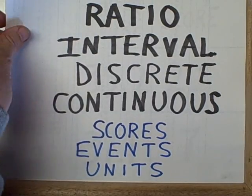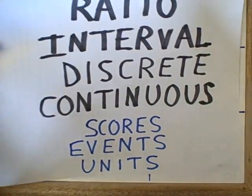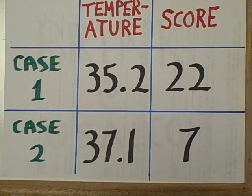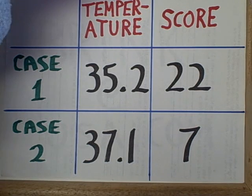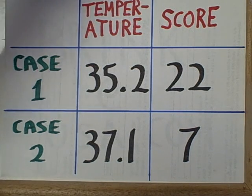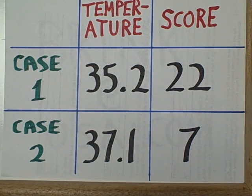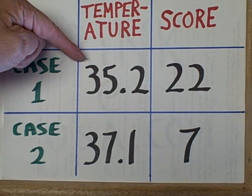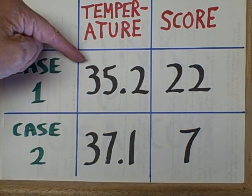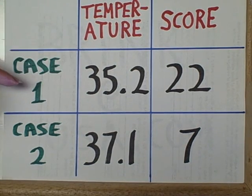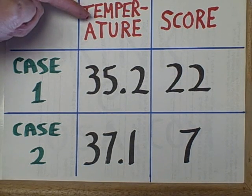The important thing to remember is that each row represents a different case and each column is going to represent a different variable. Therefore, in the cell that would be at the upper left, you are going to enter the score or number that represents what our first case scored on the first variable.